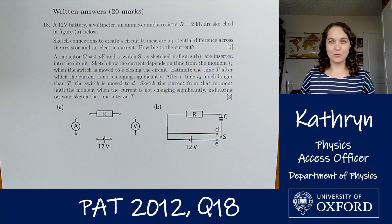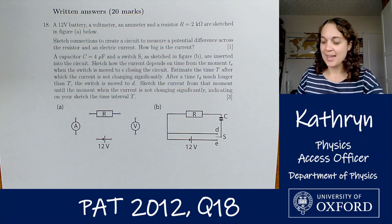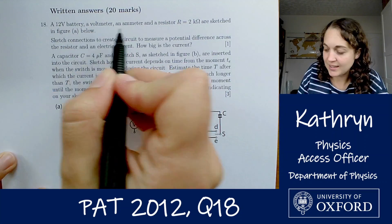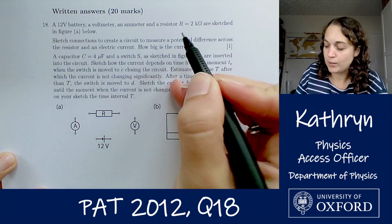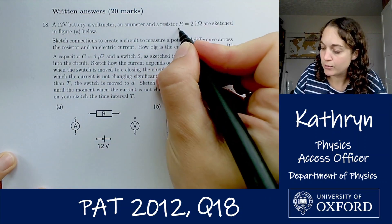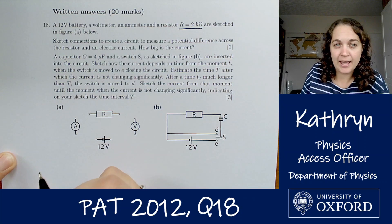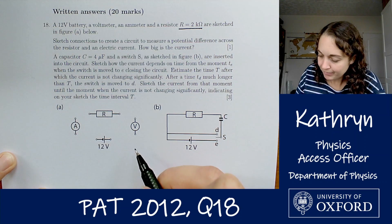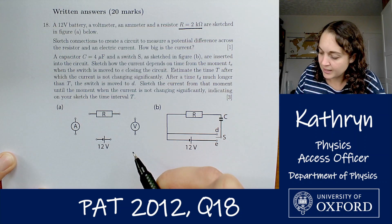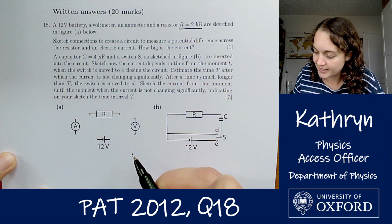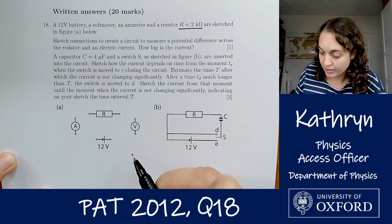So let's see what we've got. A 12 volt battery, a voltmeter, an ammeter, and a resistor with R equals 2 kiloohms are sketched in figure A below. Sketch connections to create a circuit to measure a potential difference across the resistor and an electric current. How big is the current?